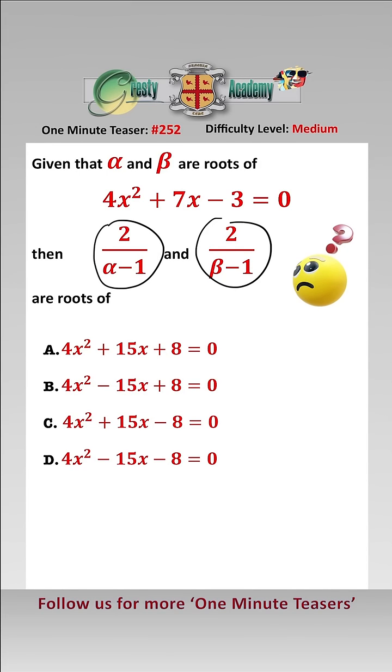Looking at these two roots here, we can use the linear transformation w equals 2 over x minus 1, which simplifies to x minus 1 equals 2 over w, i.e., x equals 2 plus w over w.